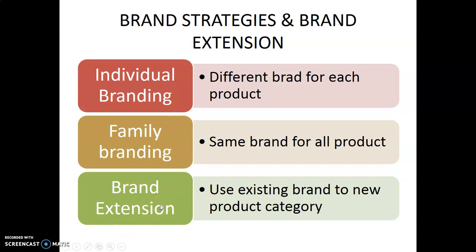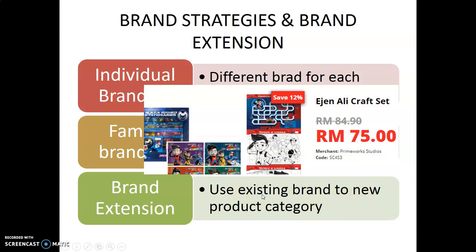We have already covered modification and line extension — it is the same one. Use an existing brand for a new product category. It's Agent Ali — you see, Agent Ali craft set. You know that Agent Ali is a cartoon, right? But you use the existing brand, still Agent Ali, for a new product category. It is the same as Boboy just now. So this is the second part of branding.